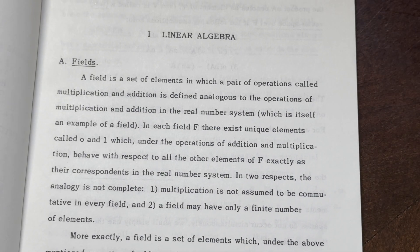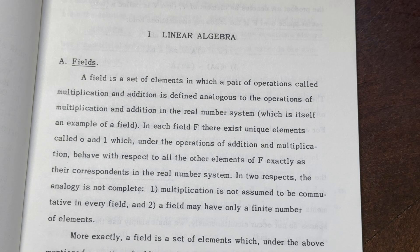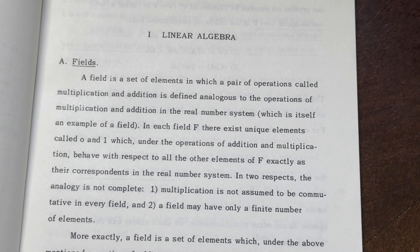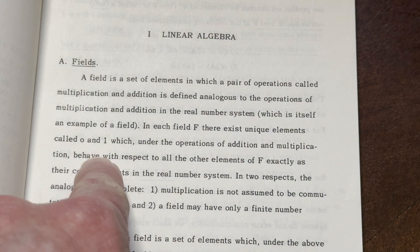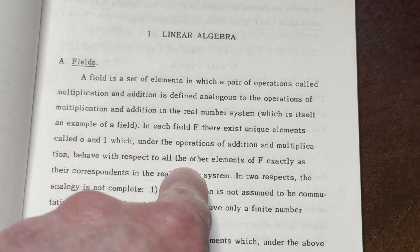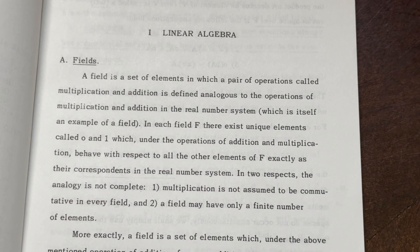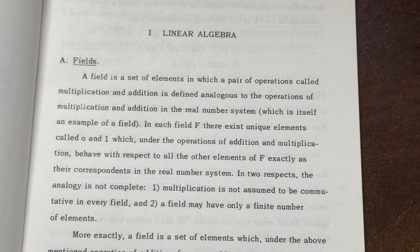Linear algebra — fields. It says: a field is a set of elements in which a pair of operations called multiplication and addition is defined, analogous to the operations of multiplication and addition in the real number system, which is itself an example of a field. In each field F, there exist unique elements called 0 and 1 which, under the operations of addition and multiplication, behave with respect to all other elements of F exactly as their correspondence in the real number system.